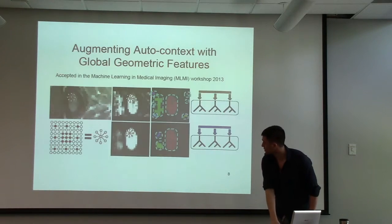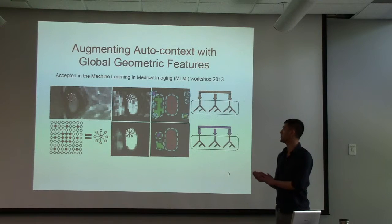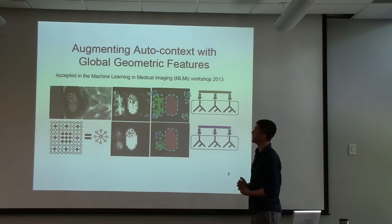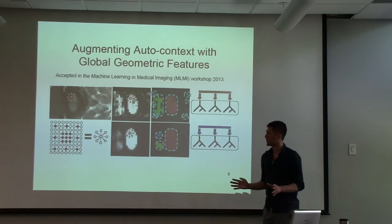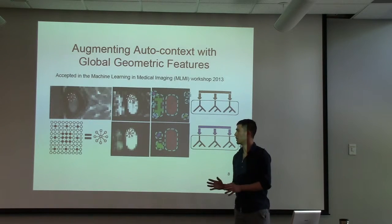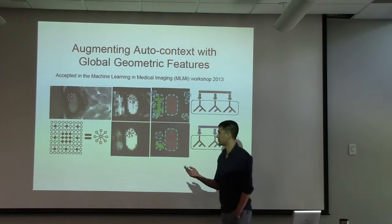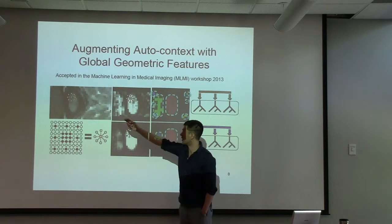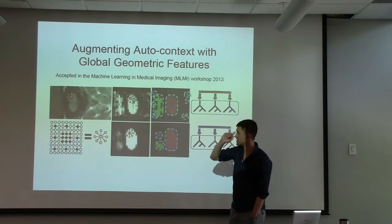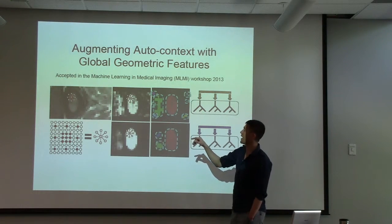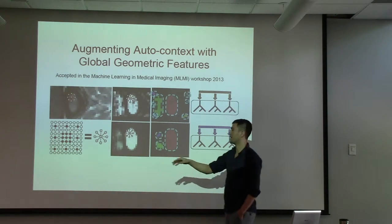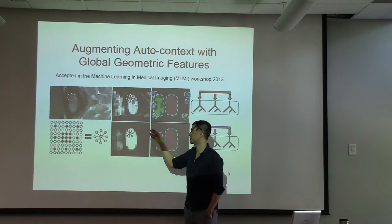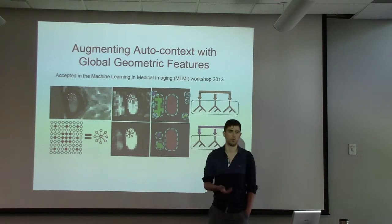Our next approach was a very different machine learning approach. We call it augmenting auto-context with global geometric features. It's a classification problem. On the far left we can see that MRI image, an axial slice, and for a particular voxel we would sample the intensities around that voxel and then with the classifier we train a classifier to predict where the spinal cord would be and where the background would be.